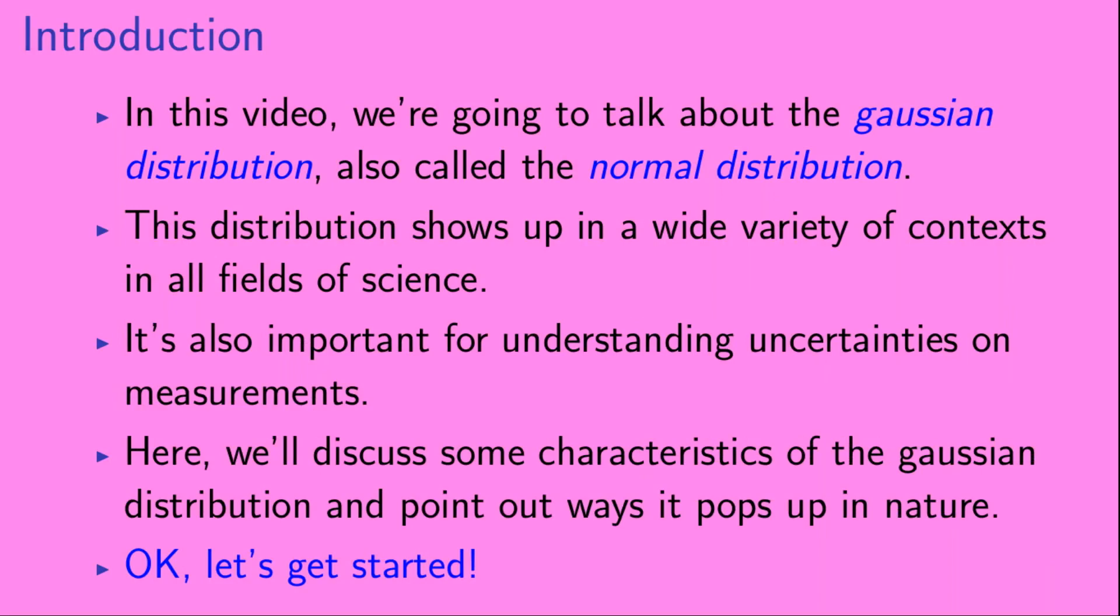Now, this distribution shows up in a wide variety of contexts in all fields of science. It's also important for understanding uncertainties on measurements. Here, we'll discuss some characteristics of the Gaussian distribution and point out ways it pops up in nature. Okay, let's get started.